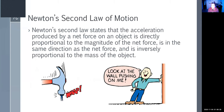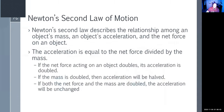Newton's second law states that the acceleration produced by a net force on an object is directly proportional to the magnitude of the net force, in the same direction as the net force, and is inversely proportional to the mass of the object. It describes a relationship among an object's mass, acceleration, and the net force on it. If the net force doubles, acceleration doubles. If mass is doubled, acceleration is halved. If both are doubled, acceleration is unchanged.